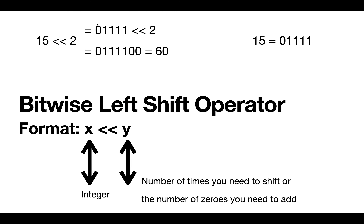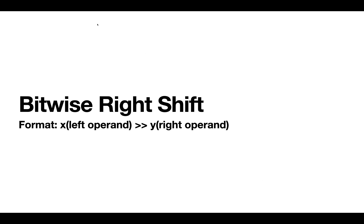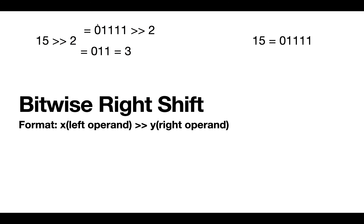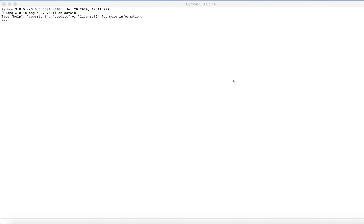Now let's go on to the bitwise right shift operator. Here, instead of adding zeros to the end, we remove as many digits from the end as the right operand tells us to. Using the same example: 15 right-shift 2. Since the right operand is 2, we remove the two rightmost 1s from 01111, which leaves us with 011, equivalent to 3 — our answer. Note that these methods are shortcuts, and for the actual shifting and two's complement there are some really good resources out there that can help you understand the concept.